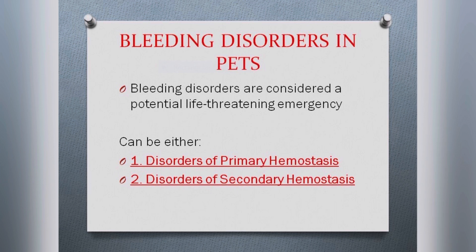Whenever there is thrombocytopenia, or a decrease in the number of platelets, it can cause problems in primary hemostasis. The normal platelet count would be above 1.8 lakhs in pet animals. When the count falls below 50,000, there can be spontaneous bleeding and blood transfusion might be necessary.